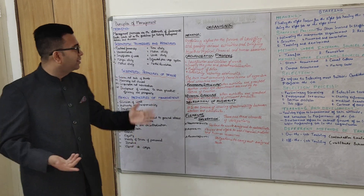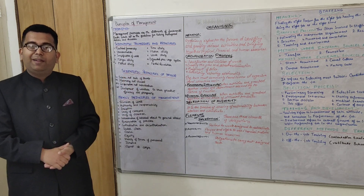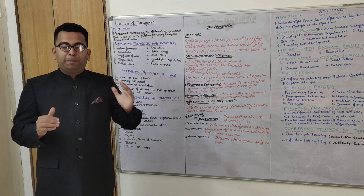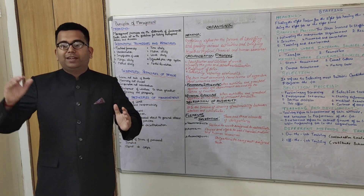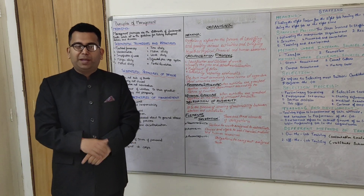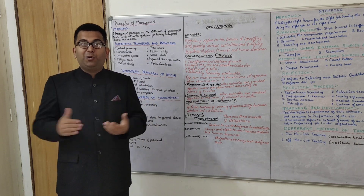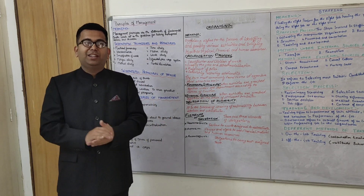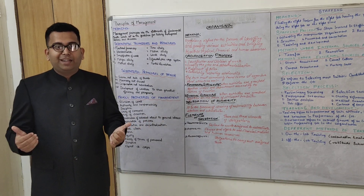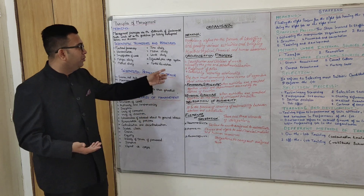Last is mental revolution. Mental revolution says that employees and management have two different opinions — workers and management don't trust or like each other. Developing a positive attitude among each other and creating harmony between them is what mental revolution is about.